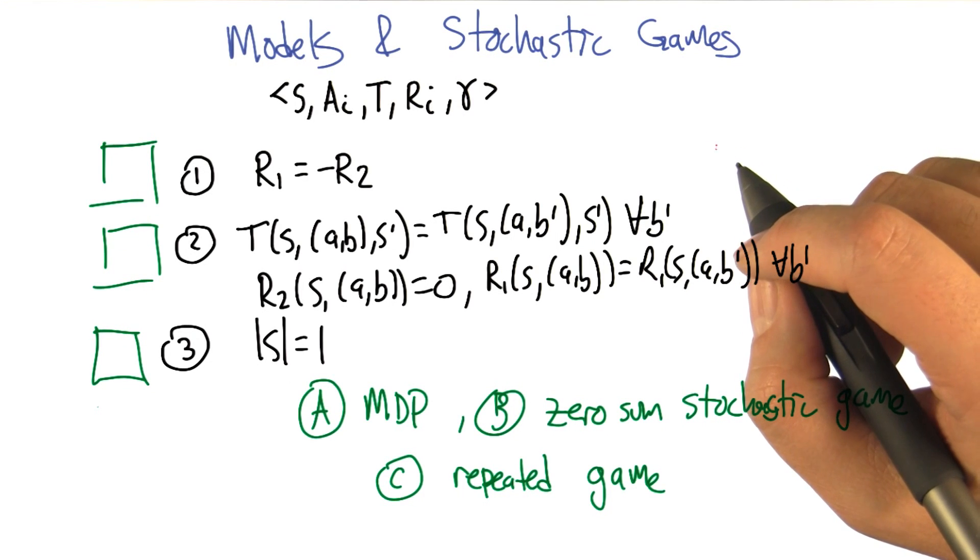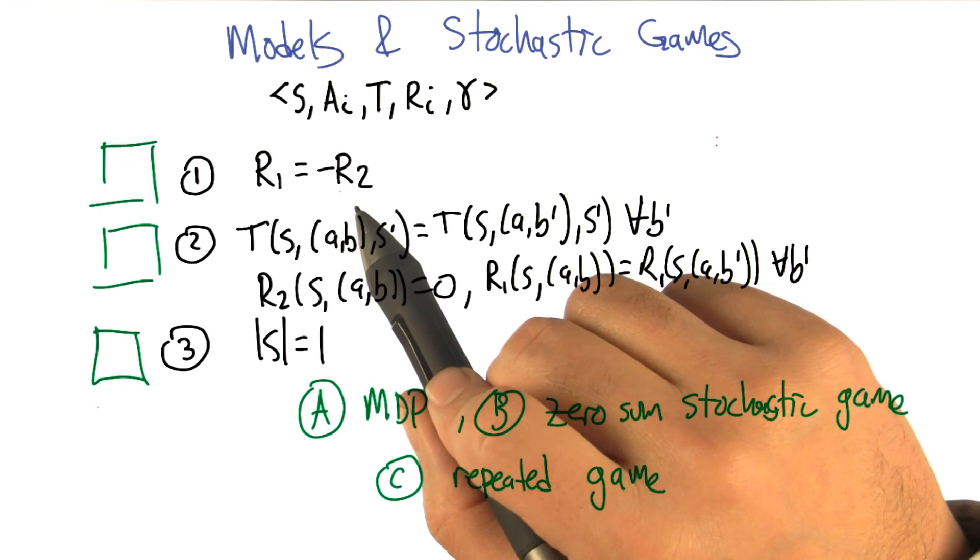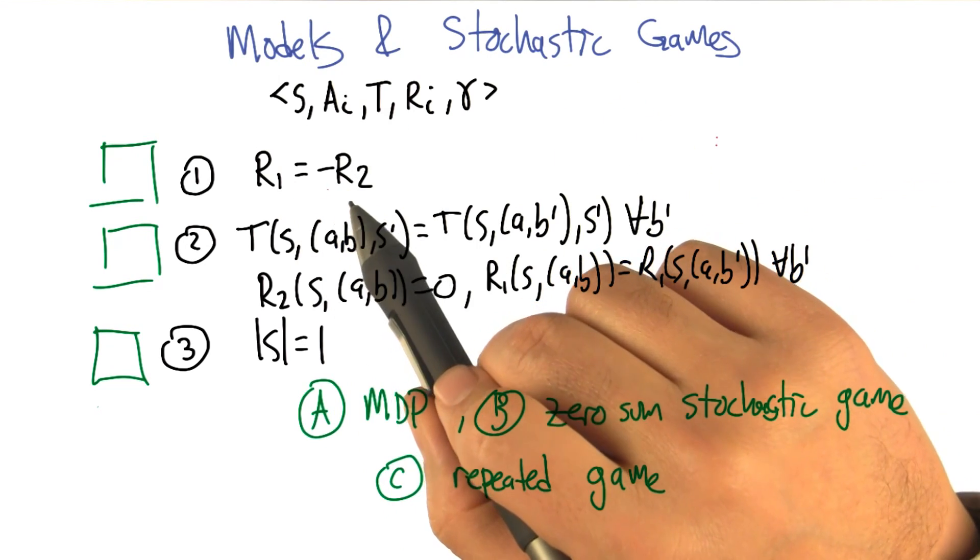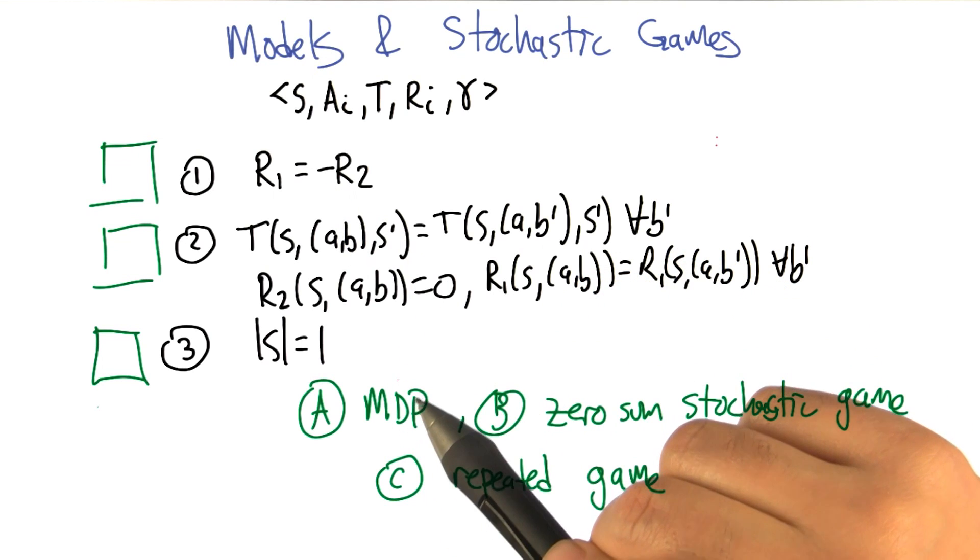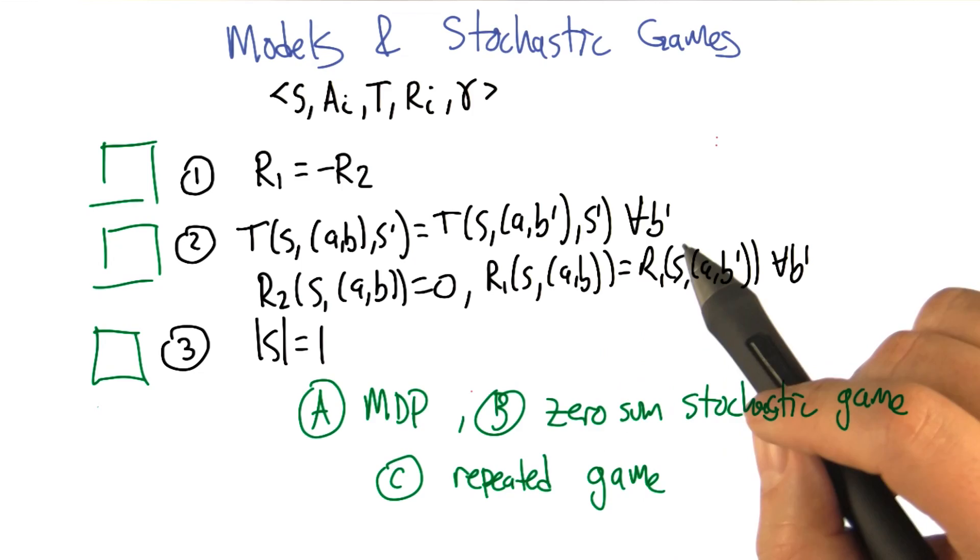All right, so stochastic games are more general than other models that we've talked about. And so just to make that case, here's a way of making the stochastic game settings more constrained. And by making them more constrained, actually turning them into other models that we've talked about or could talk about.